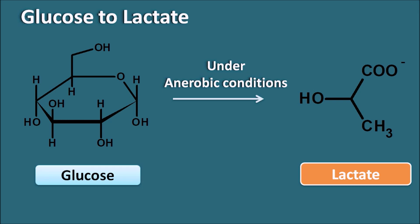Lactate is formed only under anaerobic conditions. Normally, glycolysis takes place under aerobic conditions, where glucose is converted into pyruvate.